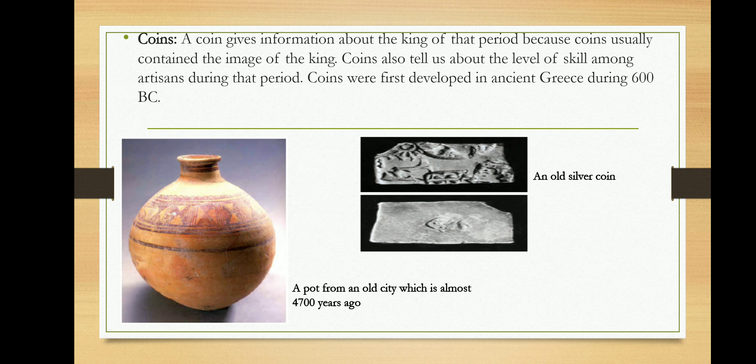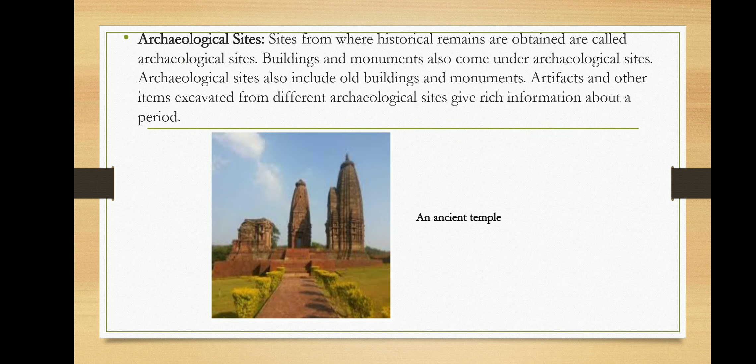Coins were also used as historical sources, made of copper, silver, or gold. Coins were first developed in ancient Greece, and a silver coin is shown for reference. They tell us about the level of skills among artisans and how people displayed their craftsmanship. Archaeological sites are a major source of information for historians. They are the remains of buildings or monuments, and artifacts extracted from these sites provide information about that period.